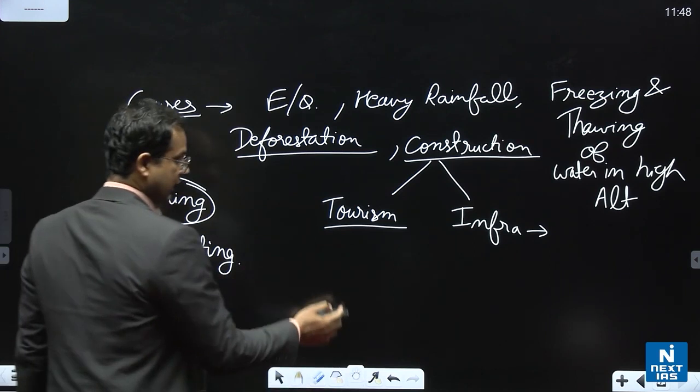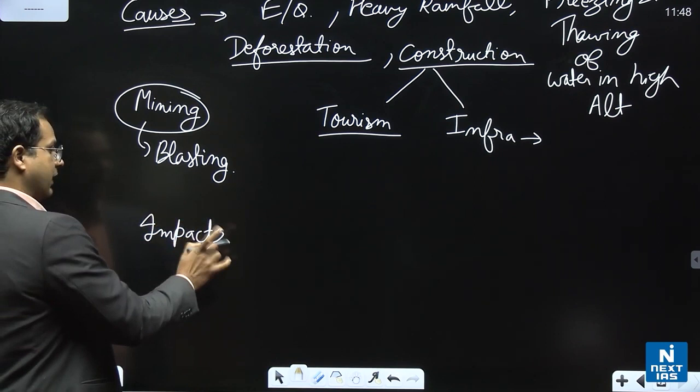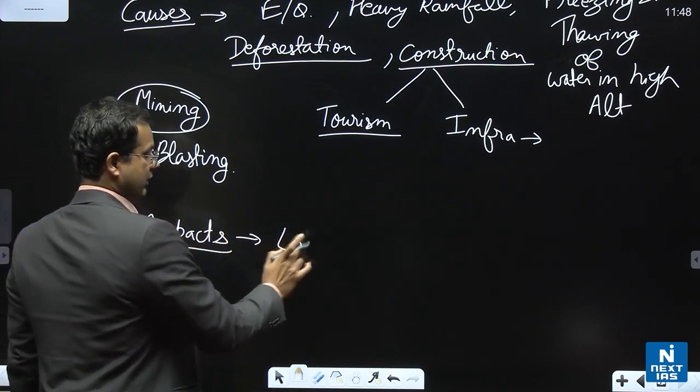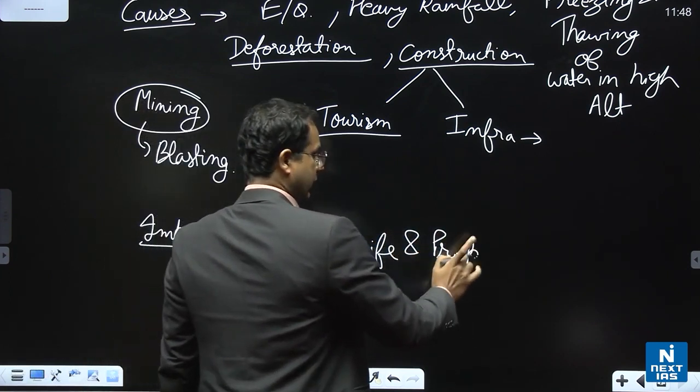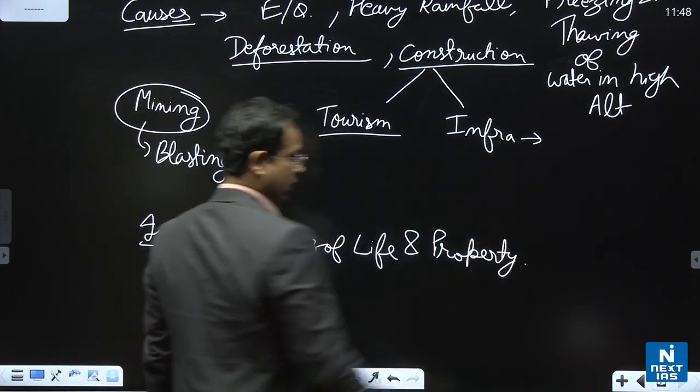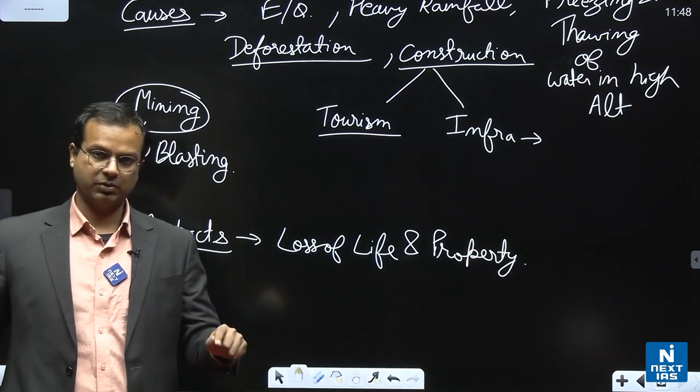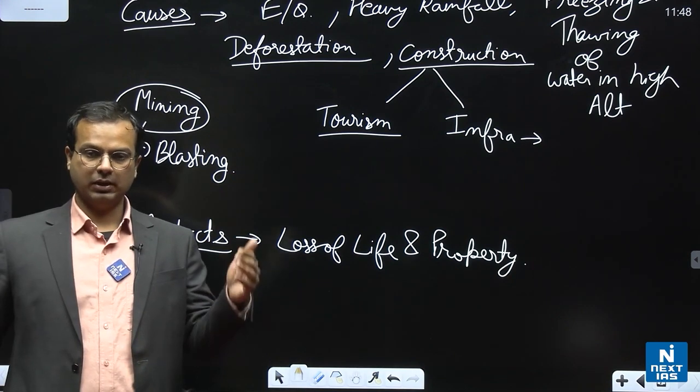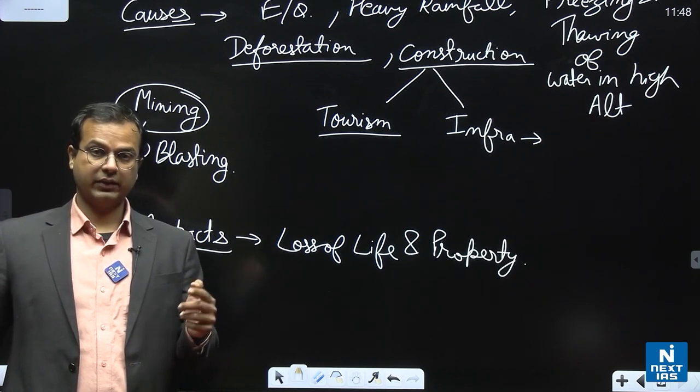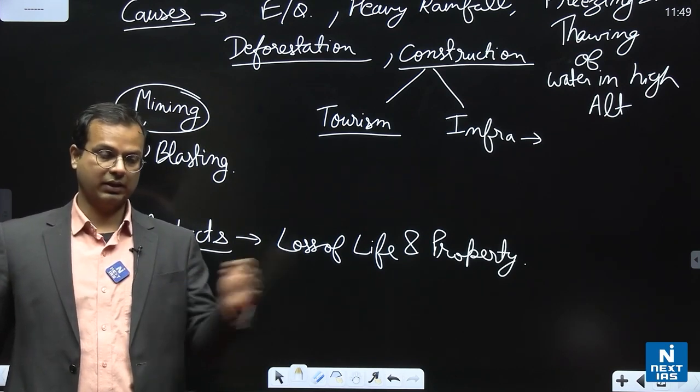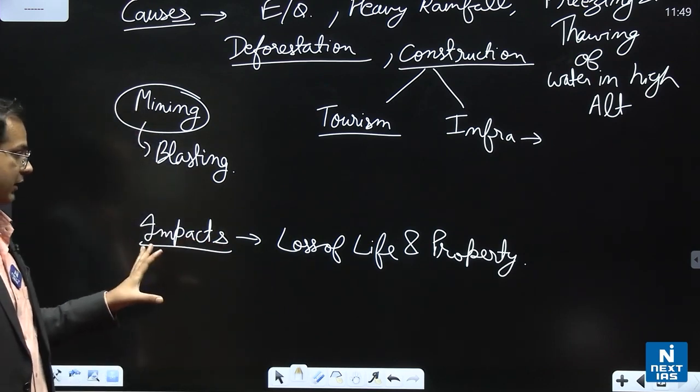Now, what can be the impacts of the landslide? Very simple. Impacts of the landslide can be - first, there is loss of life and property. That is always there. For example, in the last question we discussed, in 1999 in Chamoli there was an earthquake which caused a landslide, in which Mandakni valley and surrounding valleys were cut off. So the water supply, the communication lines, the transportation to that area was completely stopped. So this is also an impact of the landslide.